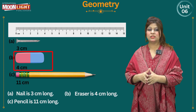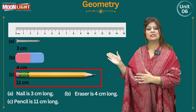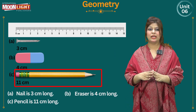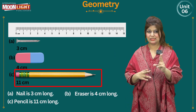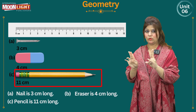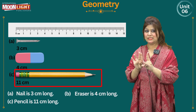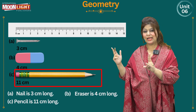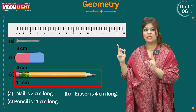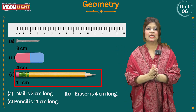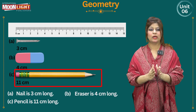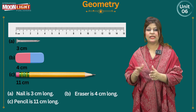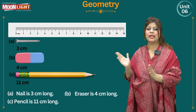Now this one is a pencil. Again I do the same thing — align one end point with 0, exactly the same way. Align one end point with 0 on the scale, then check where the other end point falls. By aligning, you can see this pencil is 11 centimeters long. So: the nail is 3 cm long, the eraser is 4 cm long, and the pencil is 11 cm long.